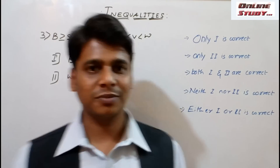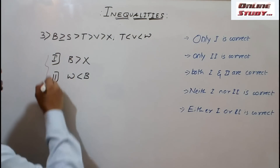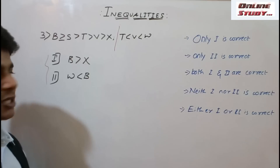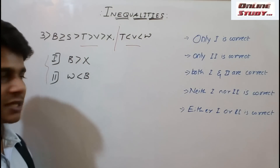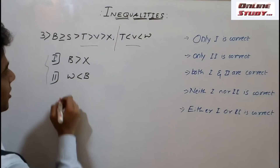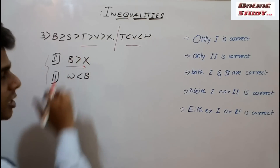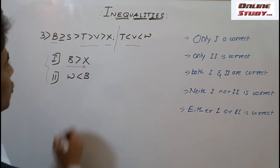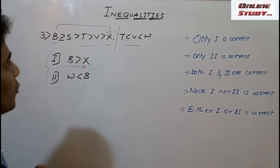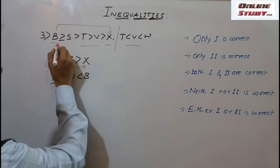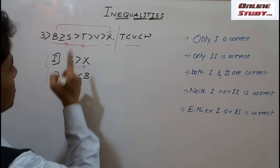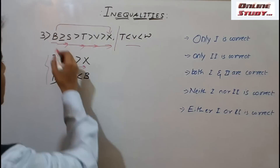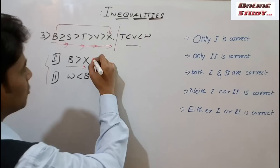Now the next question has two statements. In conclusion 1, they have given B is greater than X — we need to move from B to X. B is here and X is here. From B to S, the gate is open — possible. From S to T, the gate is open — possible. From T to V, the gate is open — possible. From V to X, the gate is open — possible. So we can move from B to X. Conclusion 1 is true.